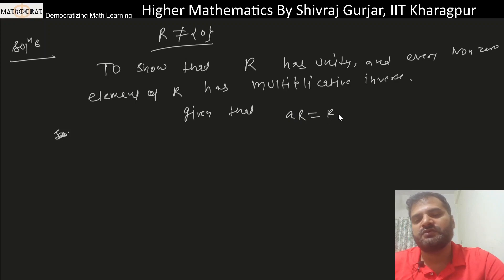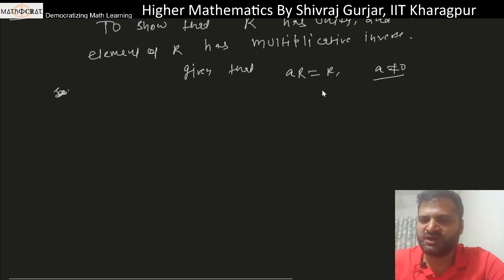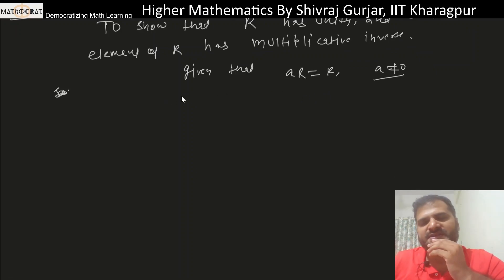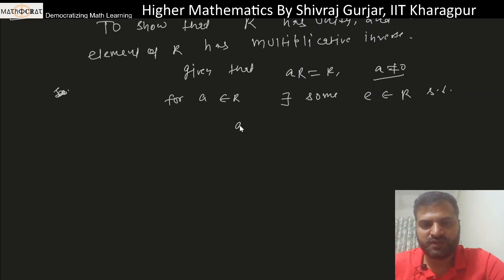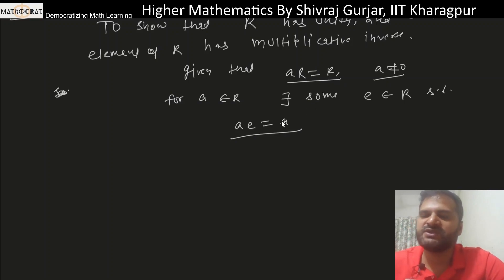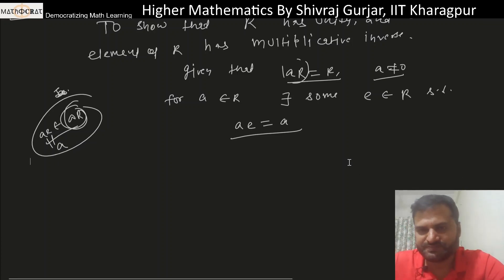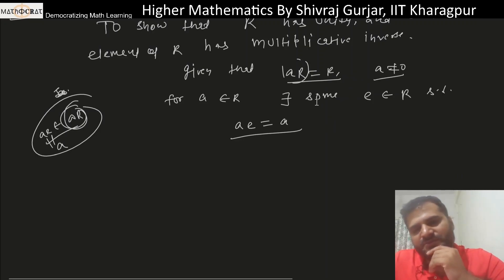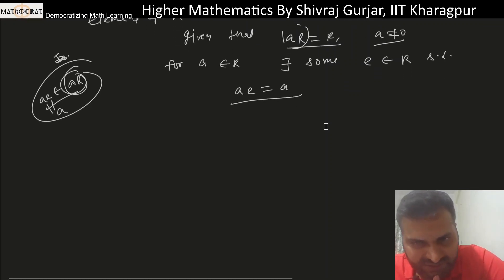Given that aR equals R where a is not equal to zero: since a belongs to R, there exists some e belonging to R such that ae equals a. We can say this because aR equals R — if there is some element e in R, then ae is an element of aR, which equals R, so this should equal a.